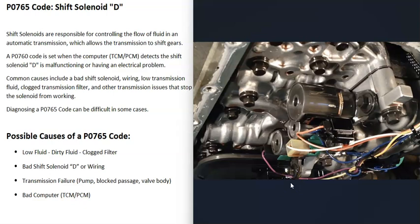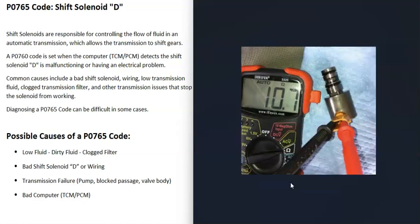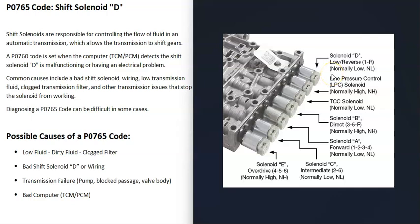The next possible cause is a bad shift solenoid D or the wiring going to it. There are different ways to test that solenoid. If you have a multimeter, you can test it using ohms — look up the rated ohms for that specific solenoid, since there will be differences, and see if it falls inside that range. If it goes outside that range or you get no reading at all and it's open, then it's bad. You'll need wiring diagrams and schematics to locate solenoid D, since locations vary.